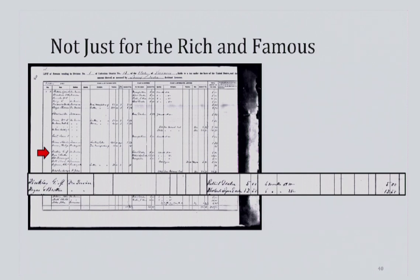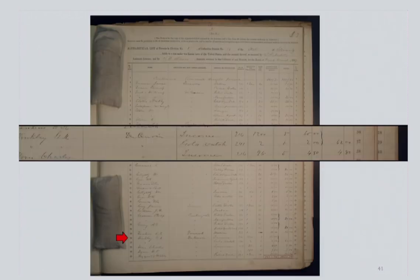It's all well and good to find famous rich people like Barnum in these assessment lists, but all kinds of Americans were captured in these records. Take G.M. Hinkley of Illinois, who lived in Perry County, covered by the 1st Division of District 13. He paid $5 in 1863 for his license to deal retail. Though limited in detail, the list tells us that Hinkley was doing fairly well for himself. By 1867, he had an income of $1,200 and a gold watch too.